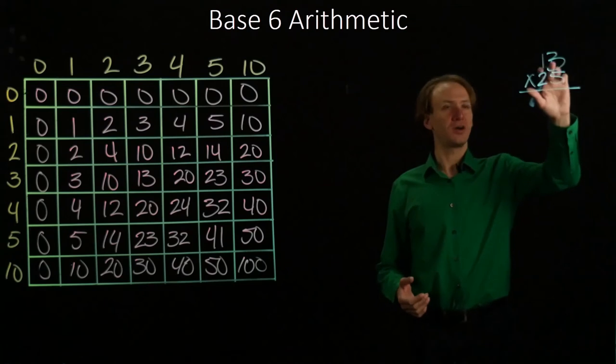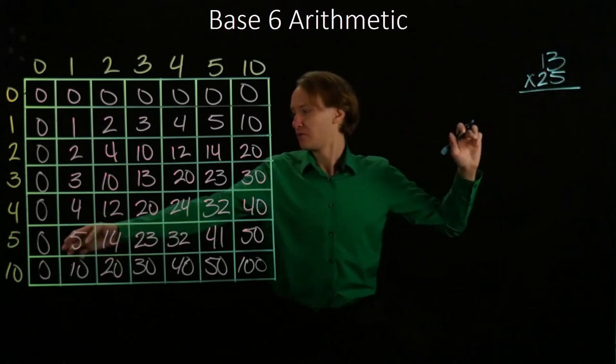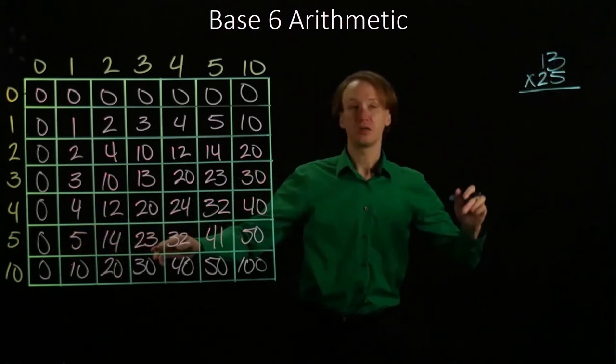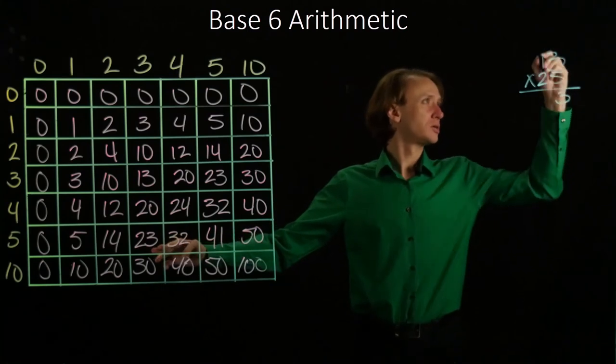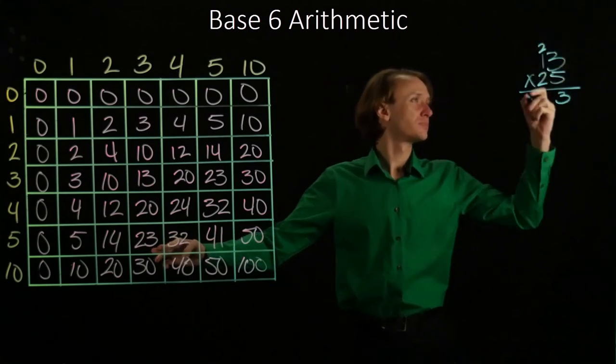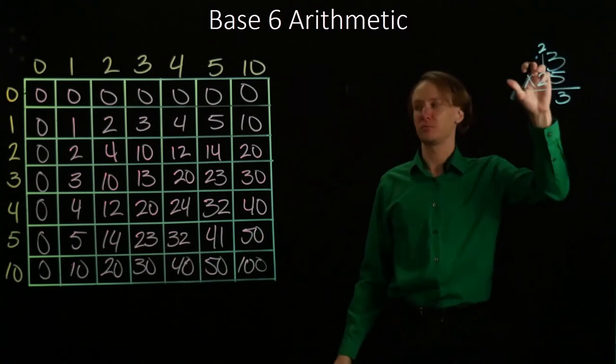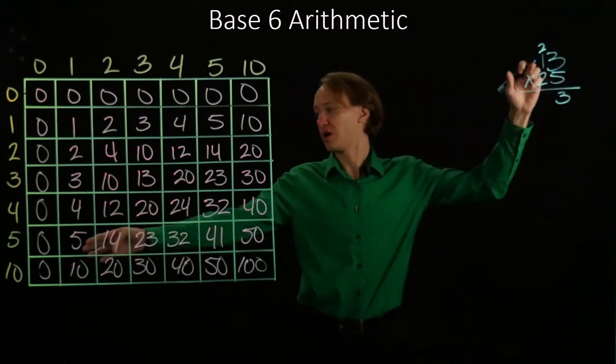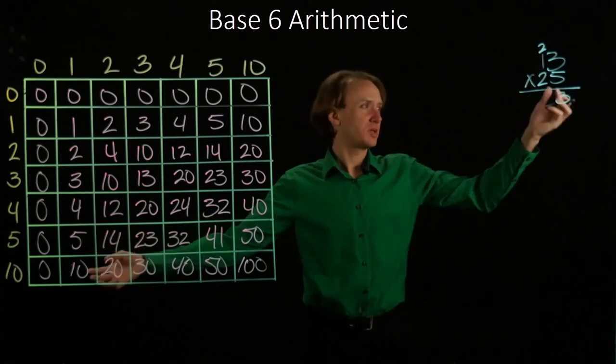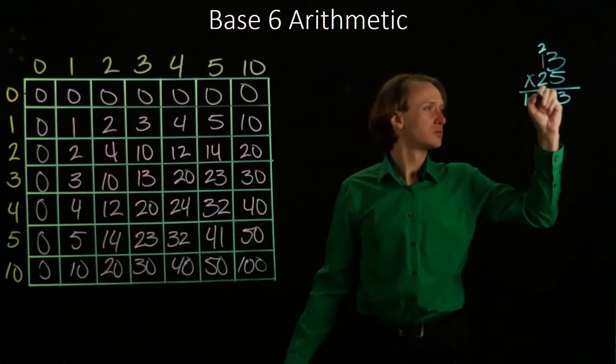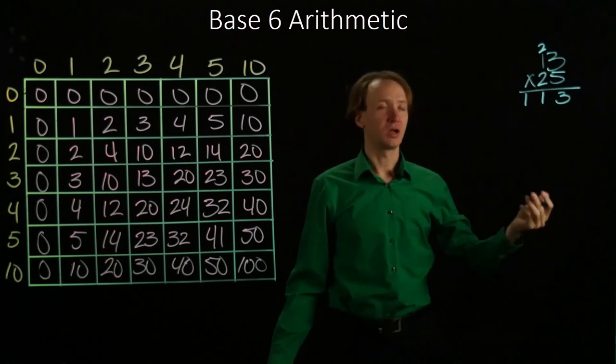So I'll start with 5 times 3. 5 times 3 is 23. So I'll write down the 3, carry a 2. Now I have 5 times 1. Well, I know 5 times 1 is 5, and I need to add 2 to it. So that will give me 11. So I'll write down the 11.